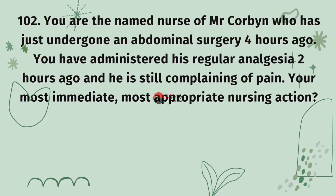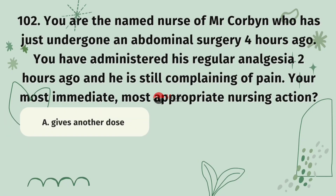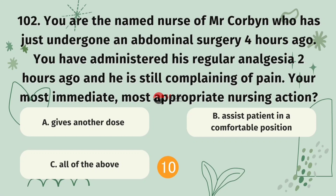Question 102. You are the named nurse of Mr. Corbin who has just undergone abdominal surgery four hours ago. You administered his regular analgesia two hours ago and he is still complaining of pain. Option A, give another dose. Option B, assist patient in a comfortable position. Option C, all of the above. The correct answer is C.